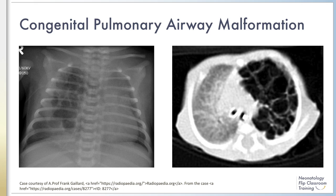CPAMs result from abnormal development of the respiratory bronchioles during the pseudoglandular stage. Histologically, CPAMs are characterized by adenomatoid proliferation, macro or micro cysts lined by columnar or cuboidal epithelium, and absence of cartilage and bronchial glands. Unlike bronchogenic cysts, CPAMs can connect to the tracheobronchial tree.